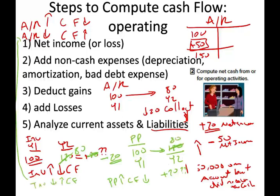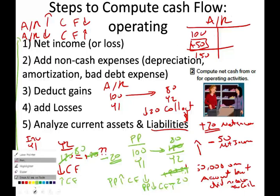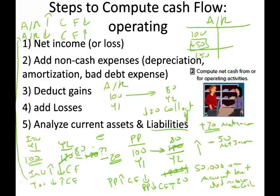As a general statement: if your current asset goes up, your cash flow goes down; if your current asset goes down, your cash flow goes up — excluding cash itself, since we're analyzing cash. This applies to all current assets.